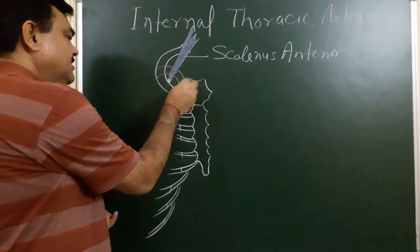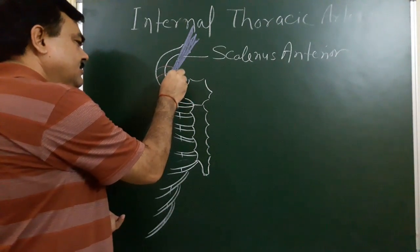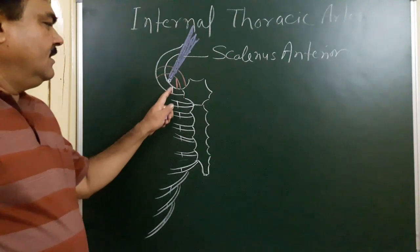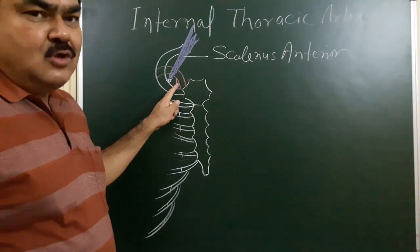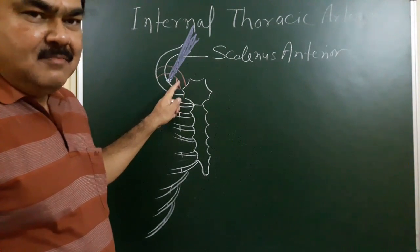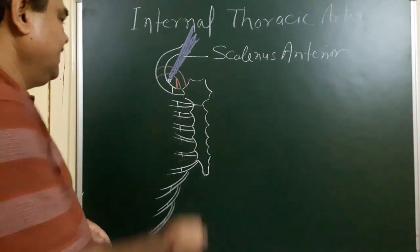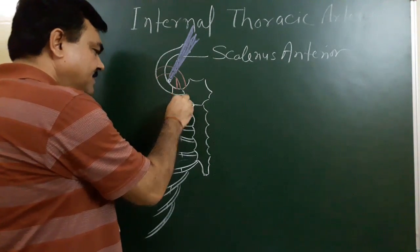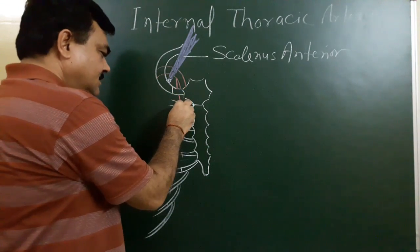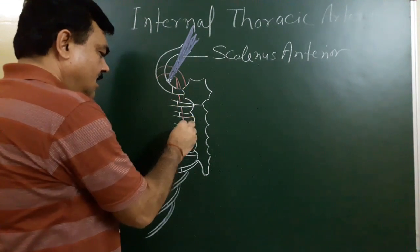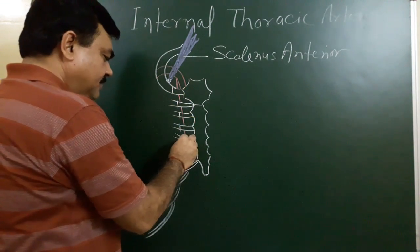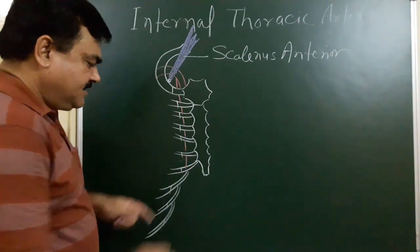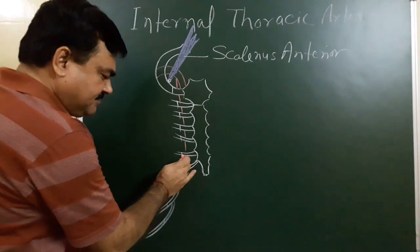The first part gives a branch which runs inferiorly. This is the internal thoracic or internal mammary artery. It passes through the first intercostal space, then second, third, fourth, fifth, and sixth.